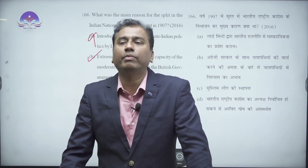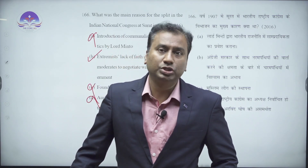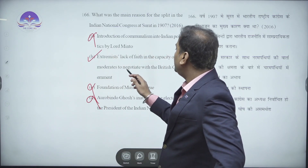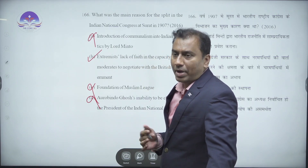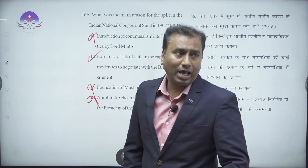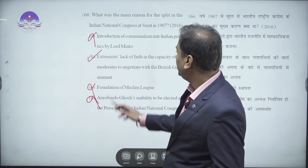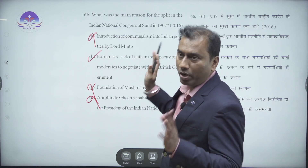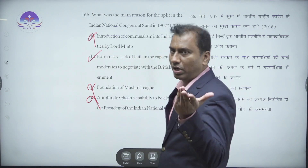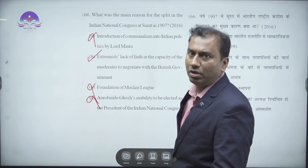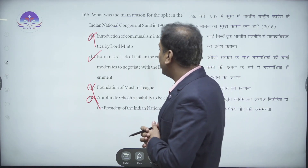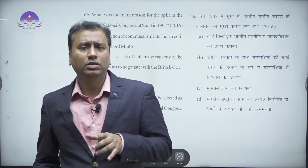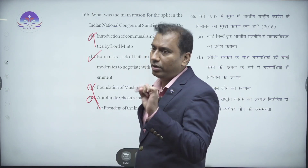Because the moderates could not stop the partition of Bengal, the extremist section of Congress - which believed in mass movements - questioned the moderates' capability, their integrity, and their techniques. They argued: 'You cannot negotiate with the British, you cannot put pressure on them.' This led to the eventual split between moderates and extremists. The extremists then launched the Swadeshi Movement at a mass level.